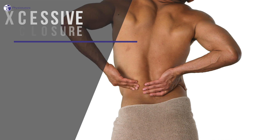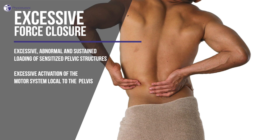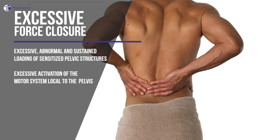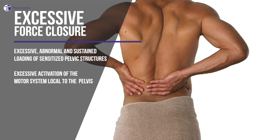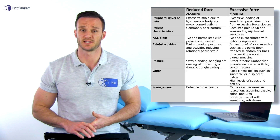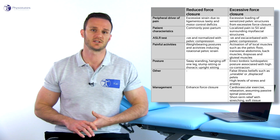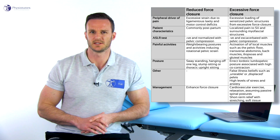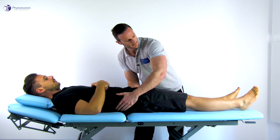Now let's look at the subgroup with excessive force closure. This group is defined by pelvic girdle pain in which the peripheral nociceptive driver is based on excessive, abnormal and sustained loading of sensitized pelvic structures from excessive activation of the motor system local to the pelvis. These patients often present with localized pain to the SI joint with sensitive surrounding structures such as the pelvic floor and piriformis muscle. On the active straight leg raise test they will often test negative and even have increased pain when the SI joint is stabilized.